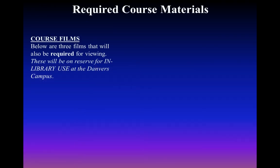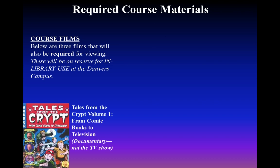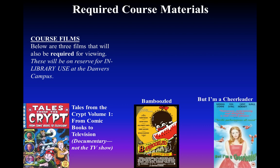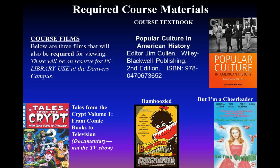We have a variety of required course materials. The first is three films, all of which will be available in the library on the Danvers campus for in-library use. Since it's an online class, students will need to get a hold of these on their own, either by going to the library or using your own means and resources. Those include Tales from the Crypt — the documentary, not the TV show — the film Bamboozled by Spike Lee, and But I'm a Cheerleader. We also have a course textbook, Popular Culture in American History, edited by Jim Cullen, which is a collection of case studies addressing many of the topics covered in the course.